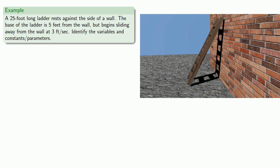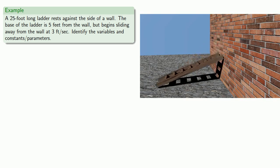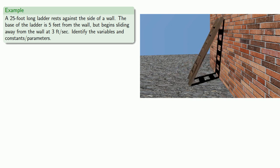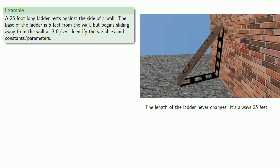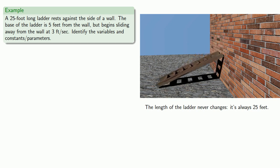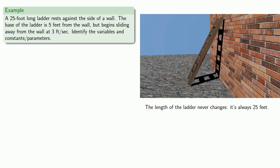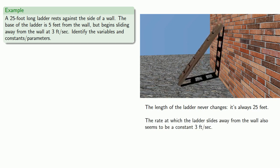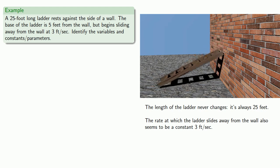So we might imagine our ladder here beginning to slide away from the wall. And so some of the things we might notice here, the length of the ladder never changes. It's always 25 feet. We also suspect that the rate at which the ladder slides away from the wall also seems to be constant, 3 feet per second.